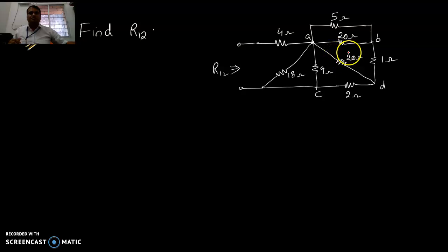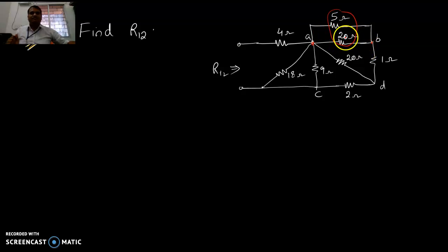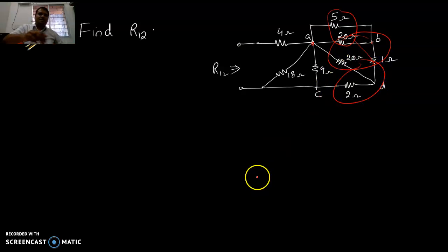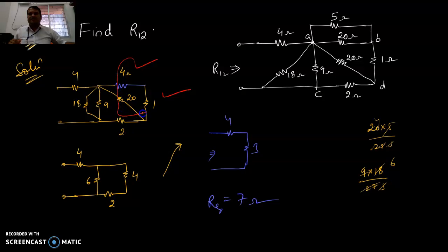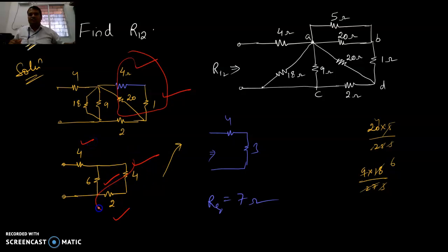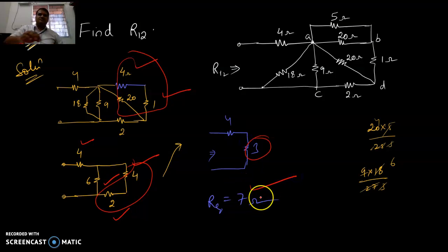Another circuit: it looks a little difficult but is again very easy. These two are in parallel because they share a common node — the 5 and 12 are in parallel. Whatever you get is in series with 1, and the entire thing is in parallel with 20, then in series with 2. Solving: parallel gives 4, then 4 and 1 becomes 5, then 5 and 20 in parallel give 4, plus 2 in series gives 6, and the equivalent resistance is 7 ohms.